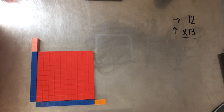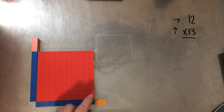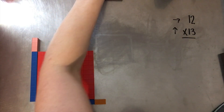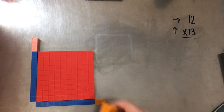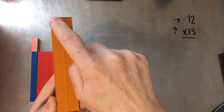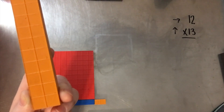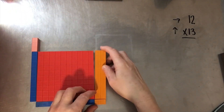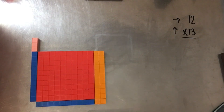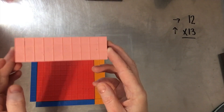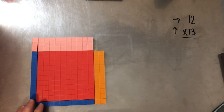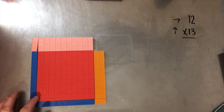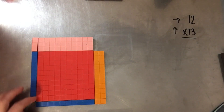Over here we can use the multi-10 blocks. Can you see there are 10 here and 10 here? So that would be two 10s, or 20 — and we can put that right there. And then the multi-10 for 30 is three 10s, and we put that right there. So so far we have 12 across and 13 up.